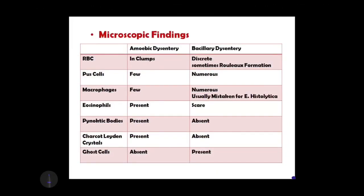Moving towards microscopic findings, which are very important for diagnosis, the most important clinical specimen is stool. In both cases of dysentery there is presence of blood. RBCs are clumped in amoebic dysentery, whereas in bacillary they are discrete and sometimes show Rouleaux formation. Pus cells are few in amoebic dysentery whereas in bacillary they are numerous.